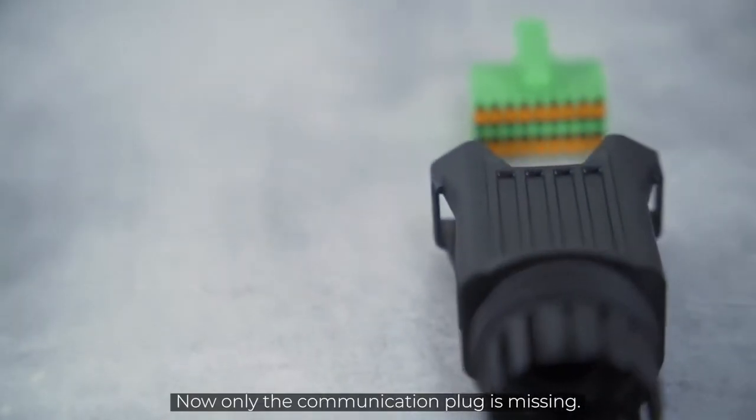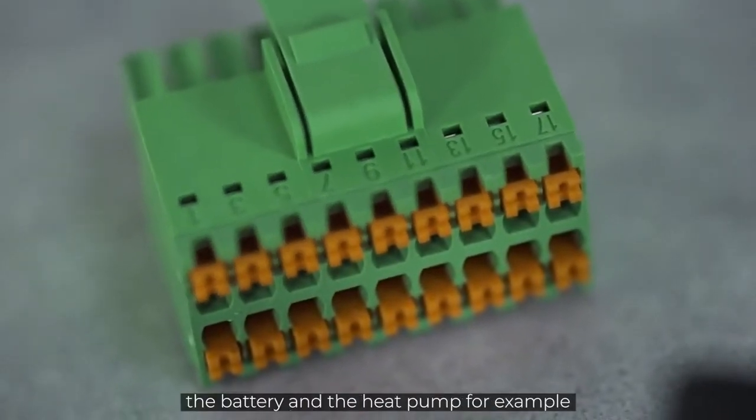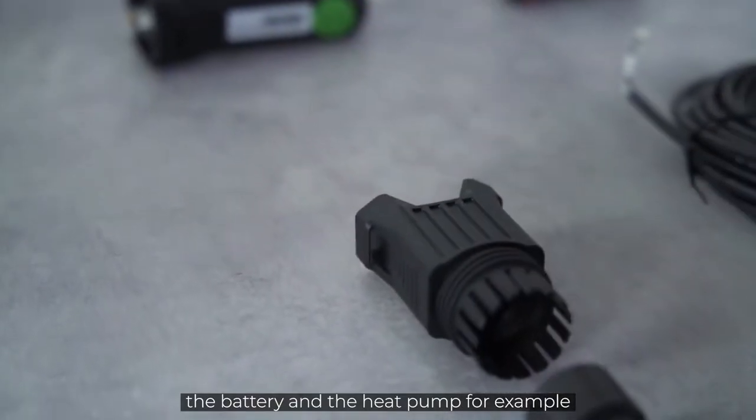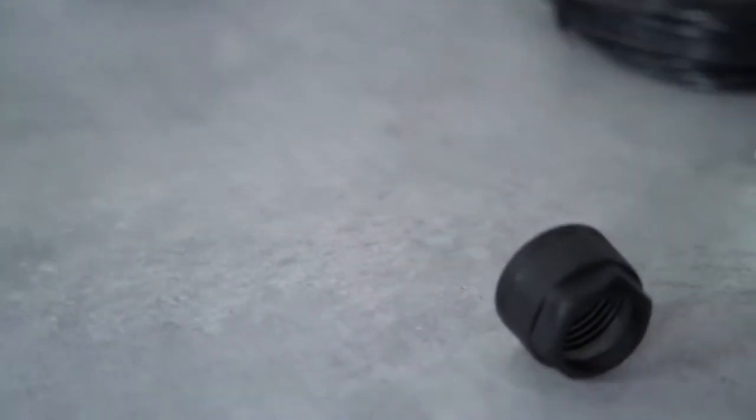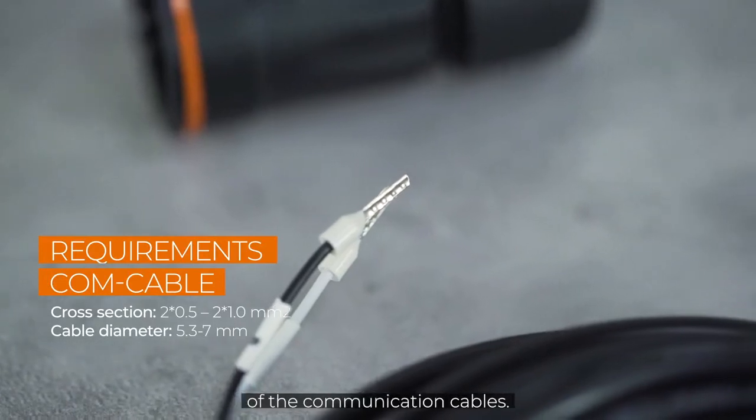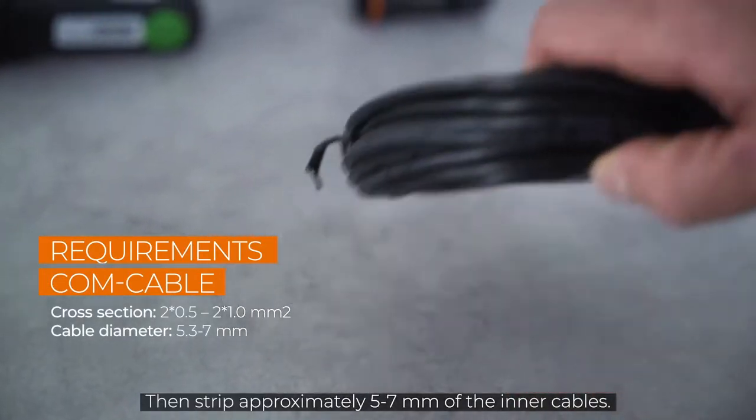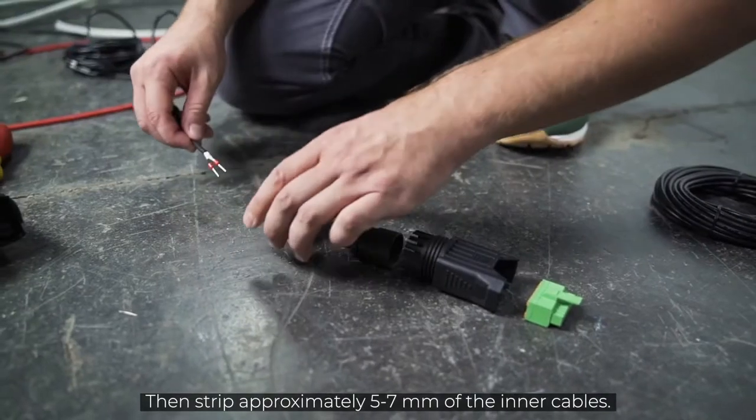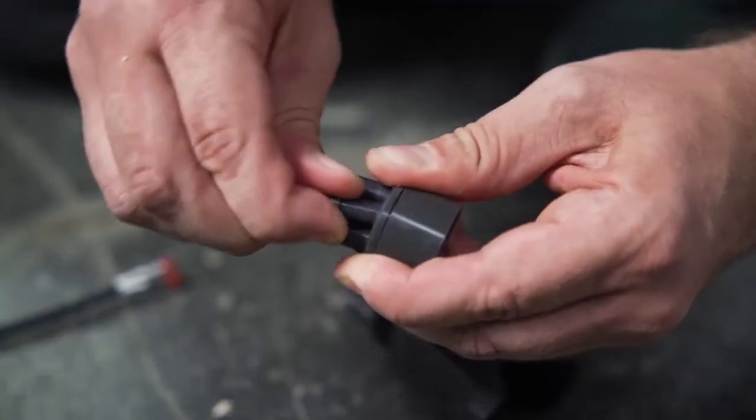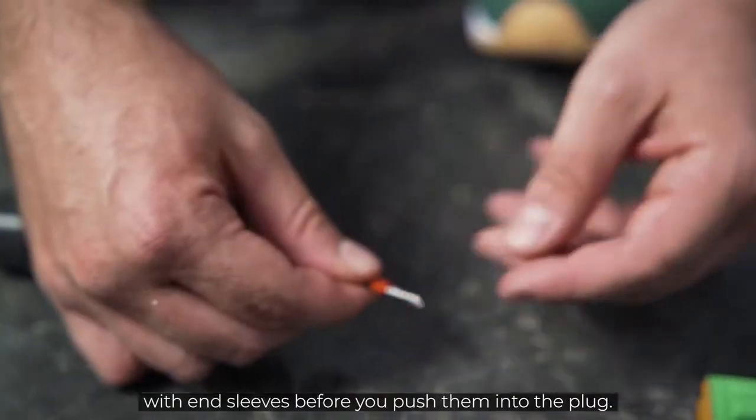Now only the communication plug is missing. The smart meter, the battery and the heat pump for example, are controlled via the communication interfaces. Remove approximately four to five centimeters of the cable sheath of the communication cables. Then strip approximately five to seven millimeters of the inner cables. If necessary, you may have to fit the cables with end sleeves before you push them into the plug.